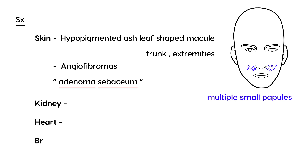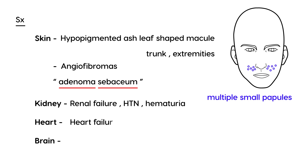There are a few other organs to discuss: kidney, heart, and brain. Kidney involvement can lead to renal failure, high blood pressure, and sometimes hematuria. Tumors in the heart can lead to heart failure. Regarding the brain, seizures are a big part of the presentation of tuberous sclerosis, especially on licensing exams. Typically, a patient with seizures will also have characteristic skin findings on physical exam, which guides you to this diagnosis.